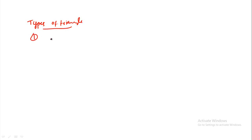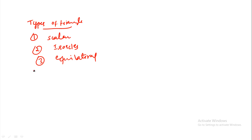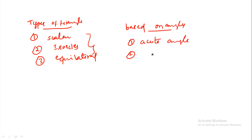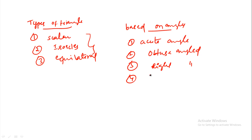Types of triangles: the first classification gives scalene, isosceles, and equilateral triangles. The second classification is based on angles: acute angle, right angle, and obtuse angle triangles.